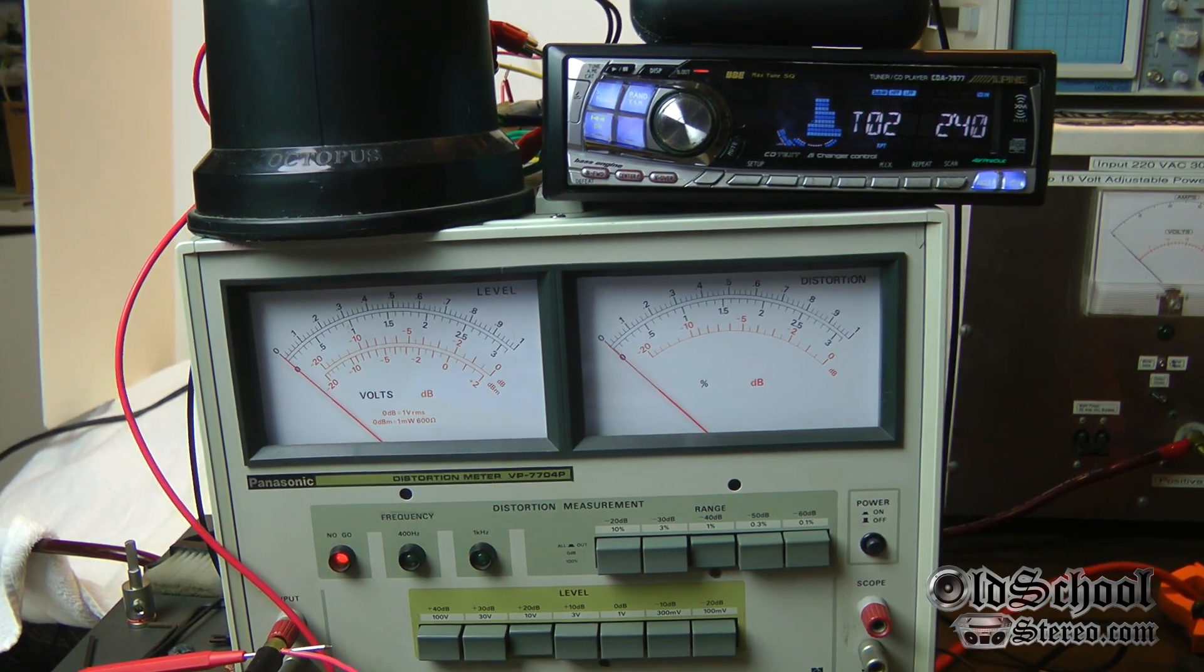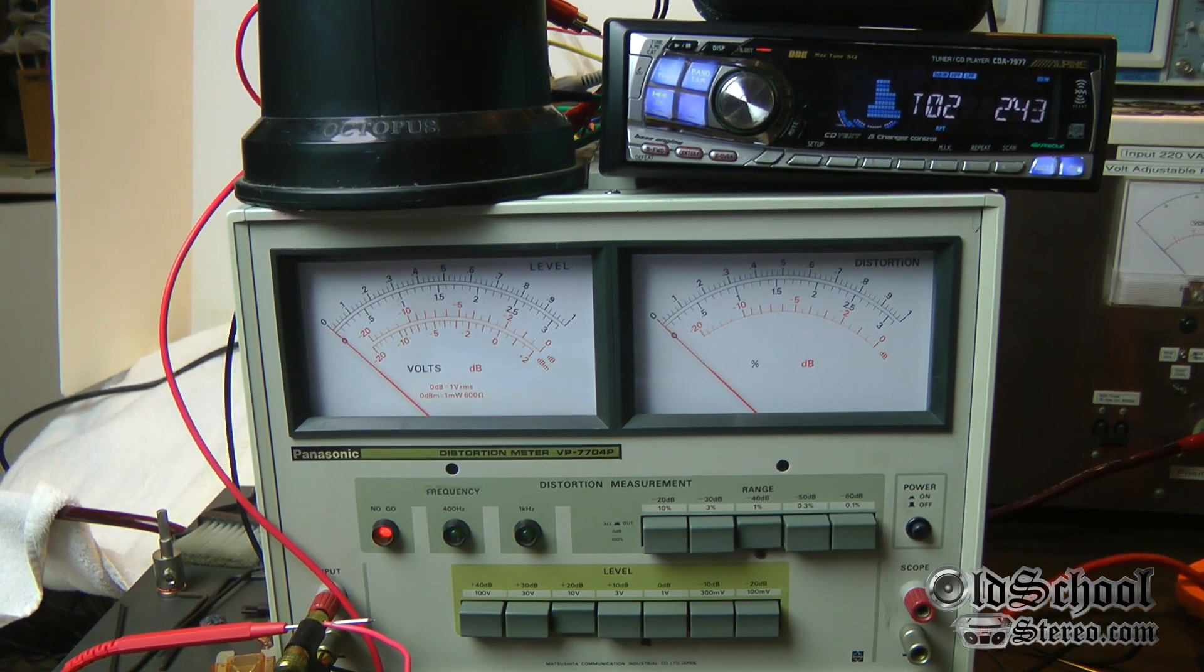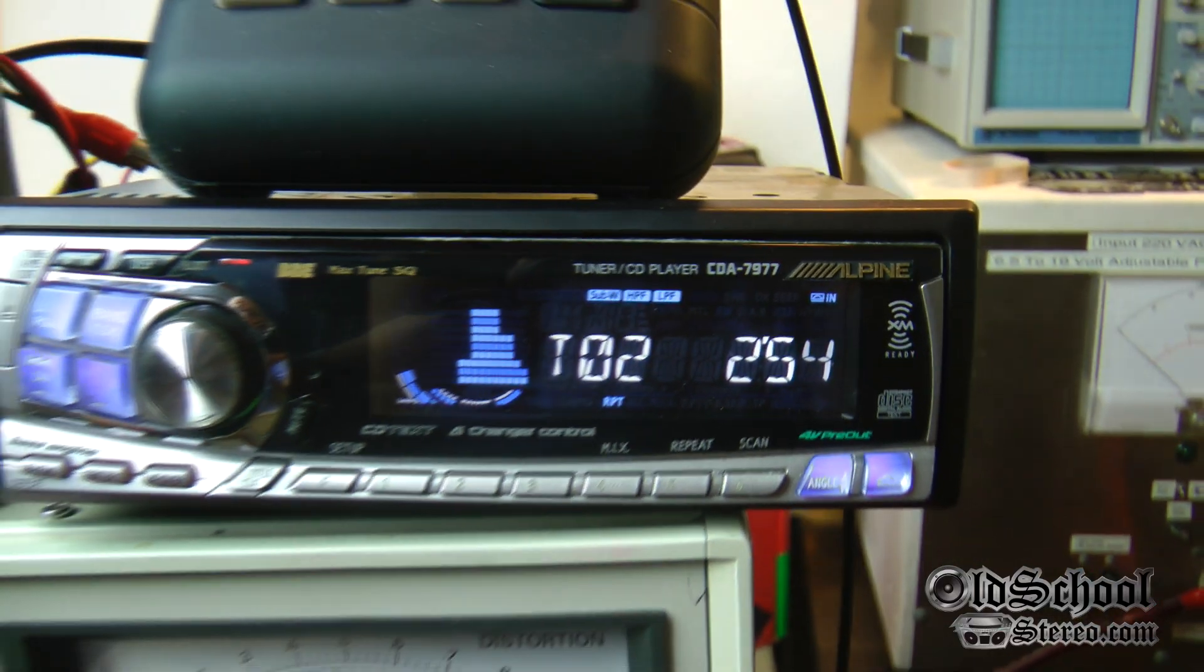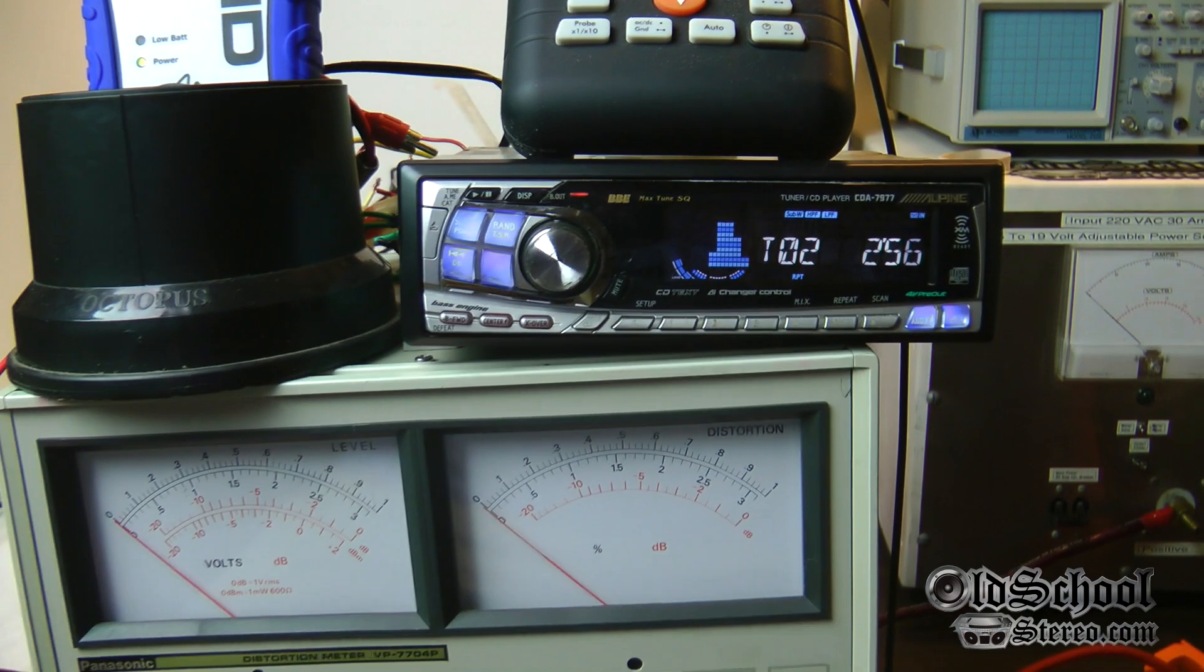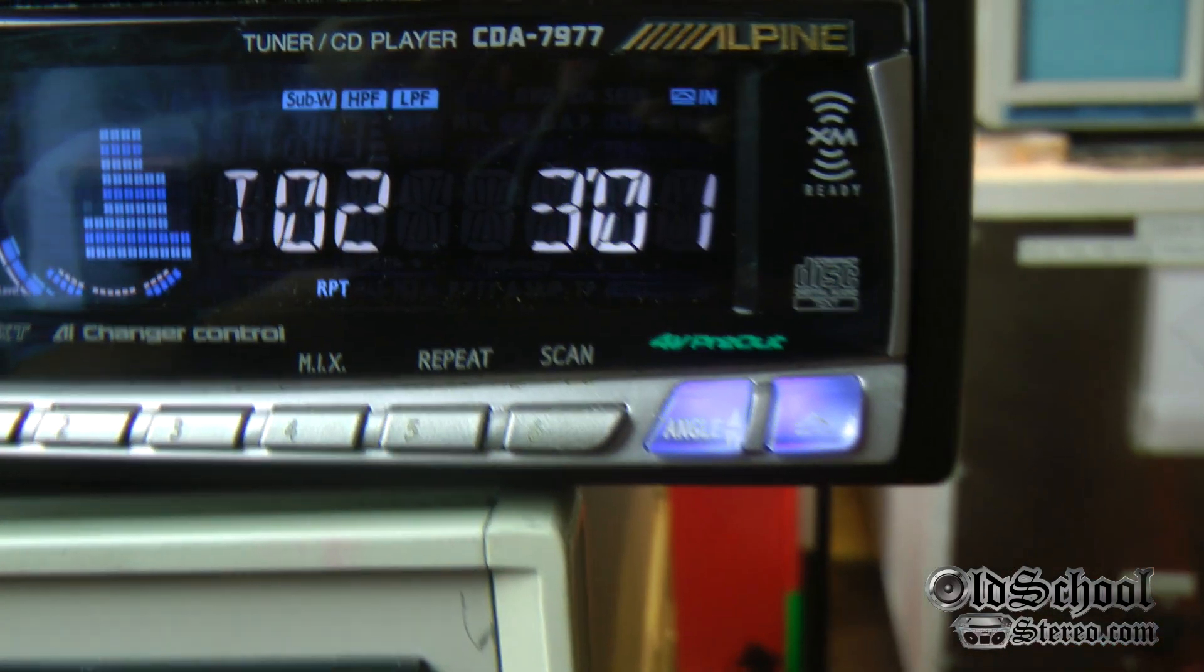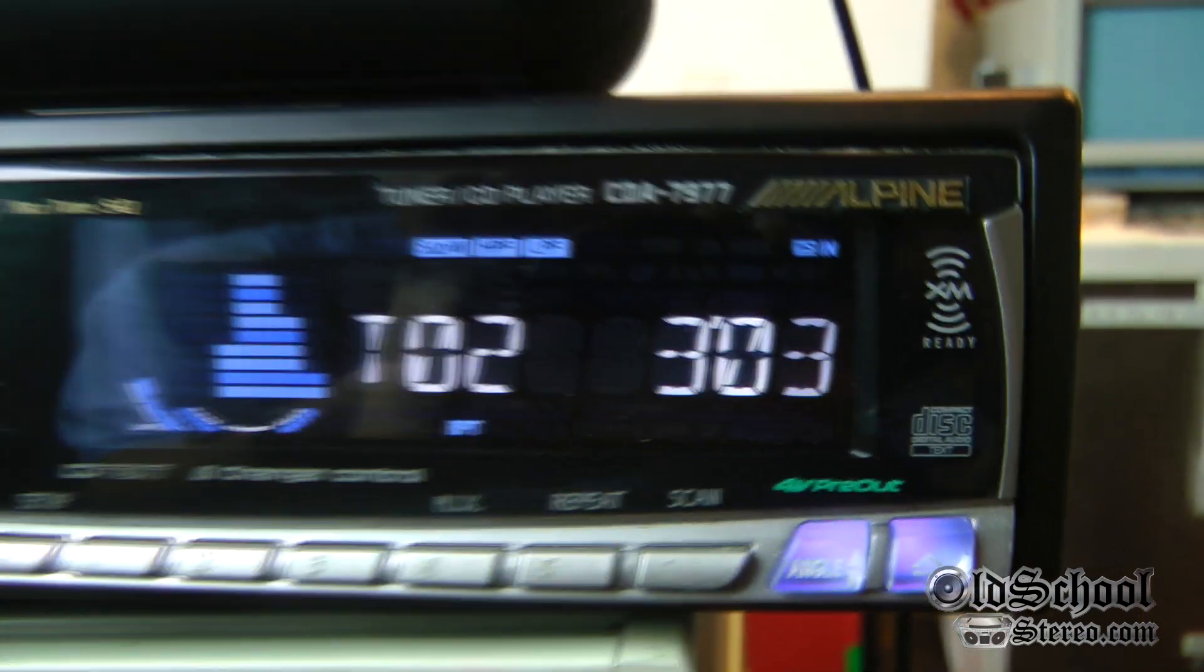Now what we have here is an Alpine CDA 7977. This is before they had mp3 playback and stuff like that. As you can see, it says four volt pre-out.